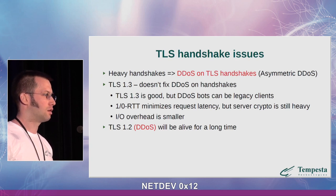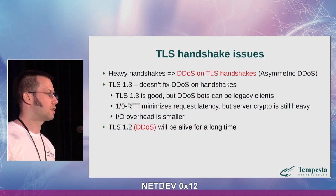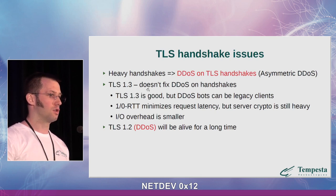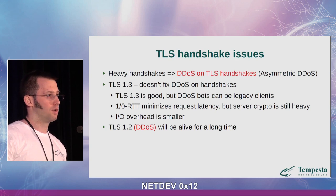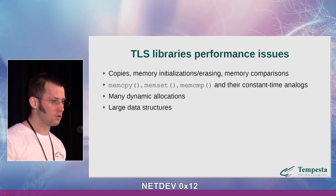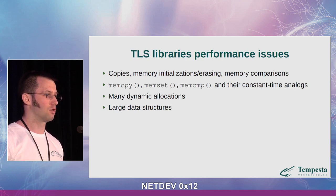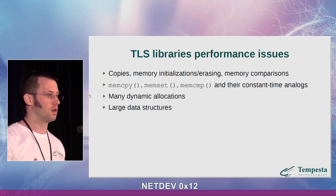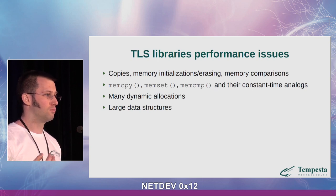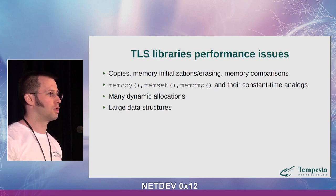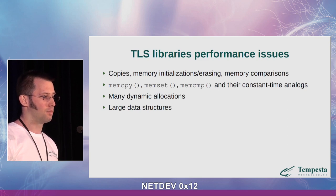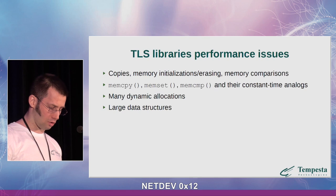TLS 1.2 will be alive for a long time, and since we have to support it, attackers can pretend to be legacy clients and try to establish legacy protocol connections. It's quite unlikely that DDoS attackers will use TLS 1.3 while we still support the old protocol. TLS 1.3 optimizes input-output, but there will still be issues in TLS libraries themselves. Crypto math is optimized, but memory allocations and data structure sizing remain bottlenecks.